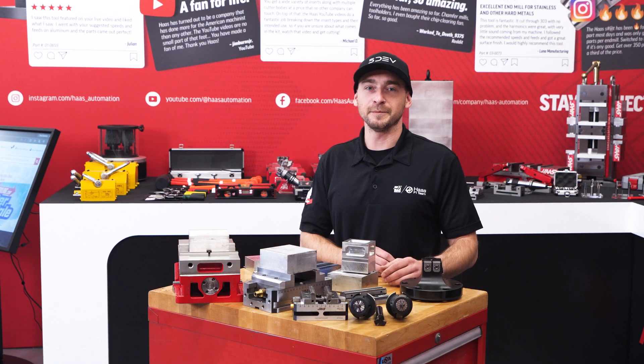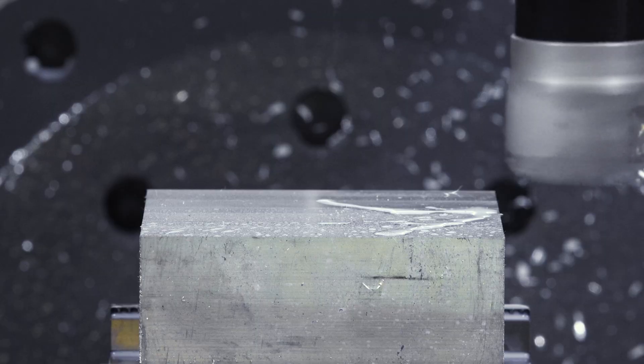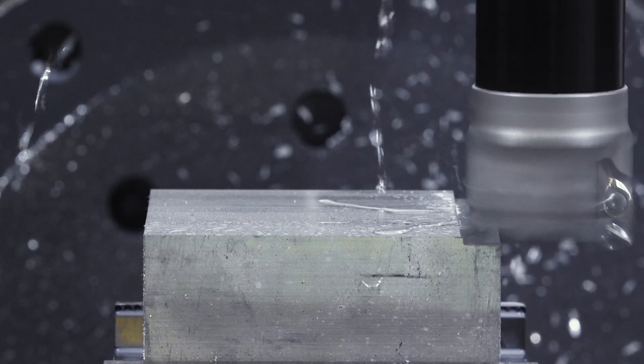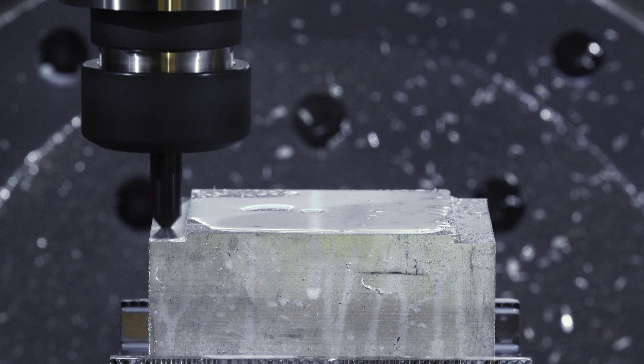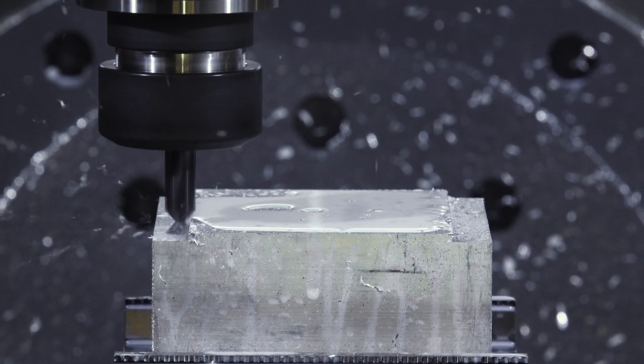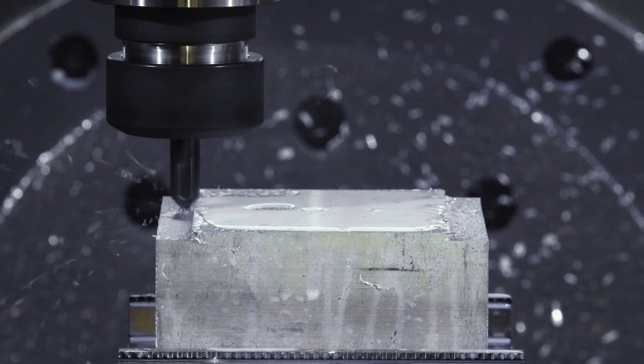There's a couple of things to keep in mind when programming these cutters. These solid carbide cutters aren't designed to hog out a ton of material at a time. You should rough out as much as possible with a different tool like an end mill or shell mill first.